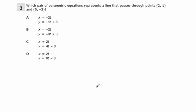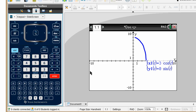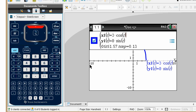Which pair of parametric equations represents a line that passes through points 2 comma 1 and 0 comma negative 3? We can just graph these parametrically here and just see which one. We should be able to see quite easily if we just go to tab.